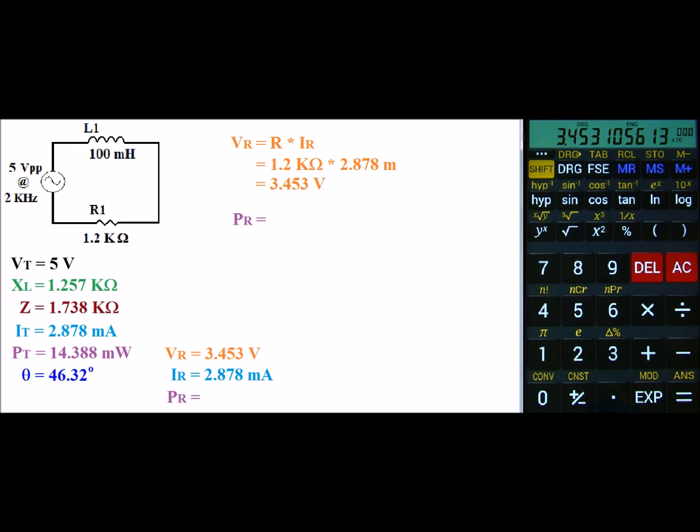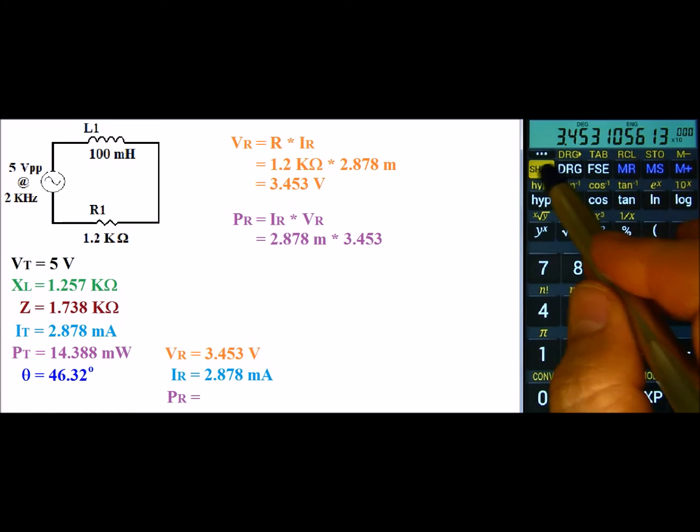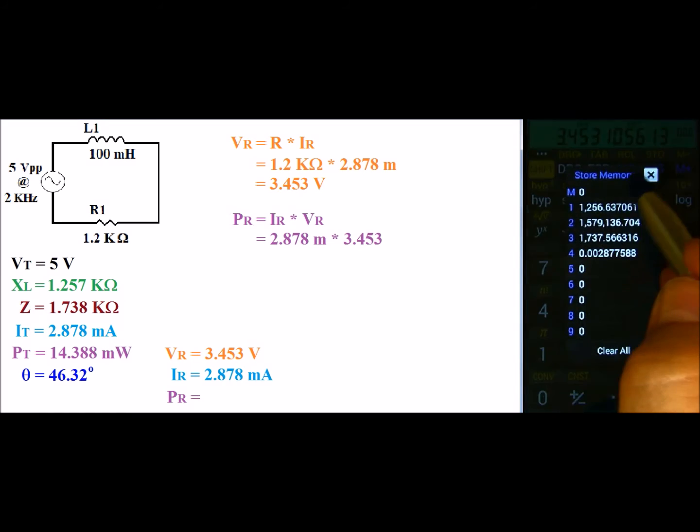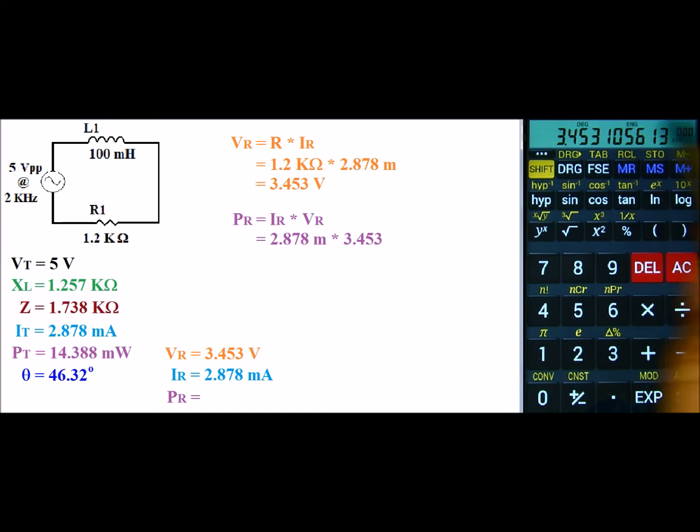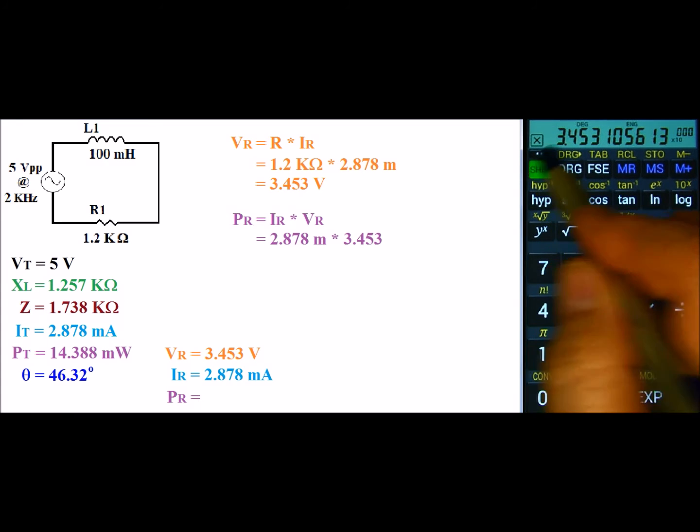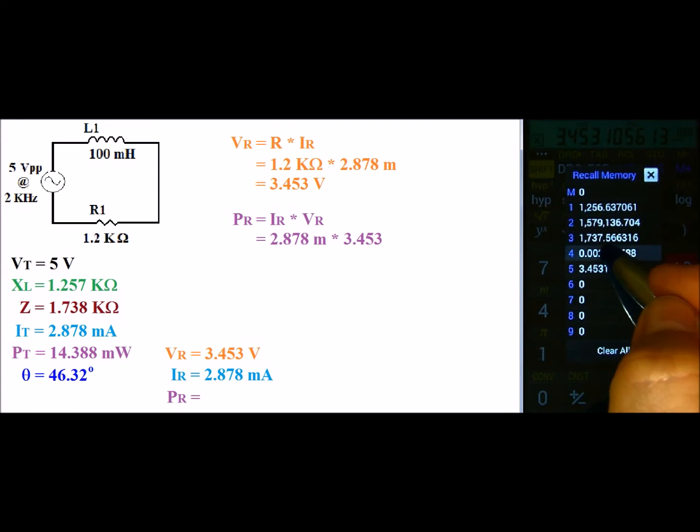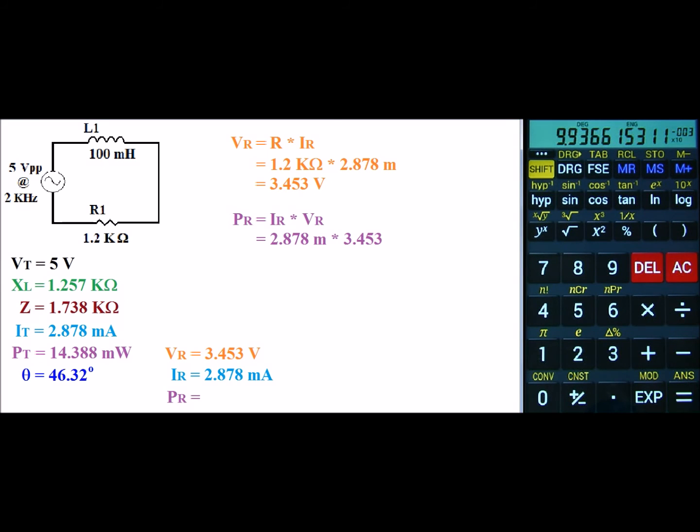Next we can find our power. Power is defined as IR times Vr. IR is 2.878 milli, and Vr is 3.453. So I'm going to take this value, store it. And then I'll go ahead and take the value of the voltage, times, recall my current. And this gives us a power of 9.937 milliwatts.